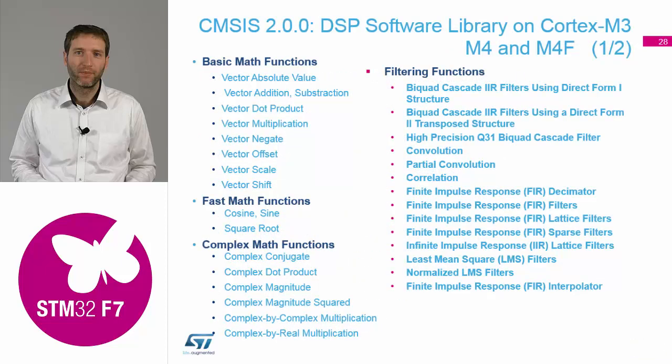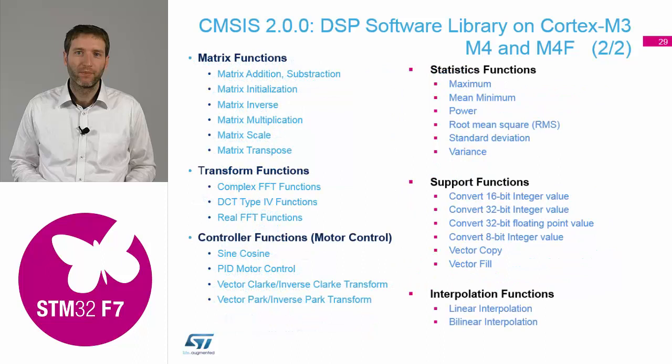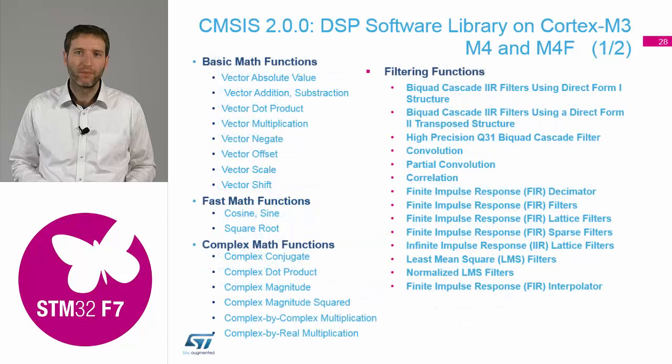Here is a better comparison of all the functionalities. We were talking about the filters — there is plenty of filter algorithms. We were talking about FFT, which is here, and you have multiple types: real FFT, complex FFT, and so on. And on top of this, it supports much more — for example, matrix functions, statistic functions if you are interested in some of the main attributes of the signal, and for vector operations, math functions, complex functions.